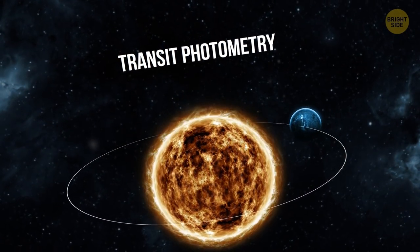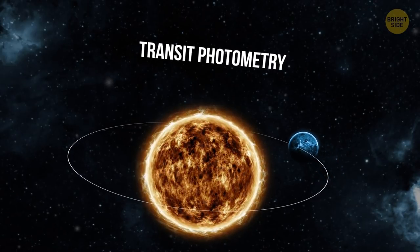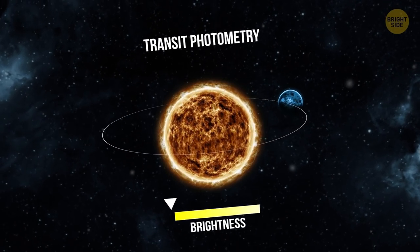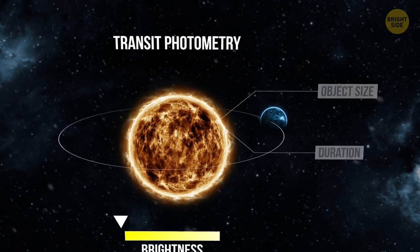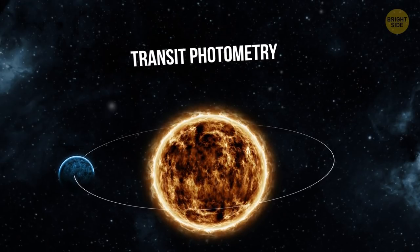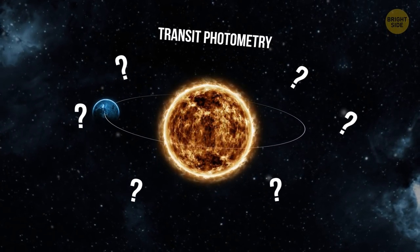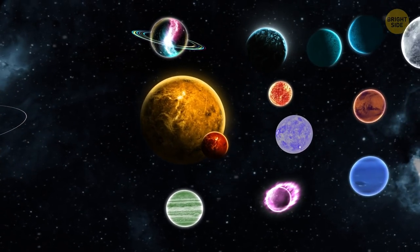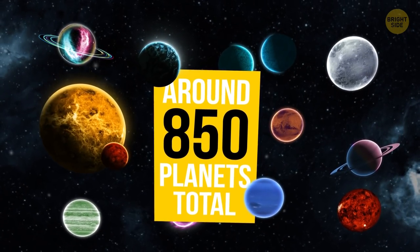Transit photometry measures the dimming of the star's light when the planet passes on its orbit between the point of observation and the star in question. As you can already see, this method provides a lot of information, but has its flaws. This is exactly the reason why so much guesswork is involved when using transit photometry. Despite that, though, a record number of exoplanets were discovered using it in 2014, around 850 planets total.